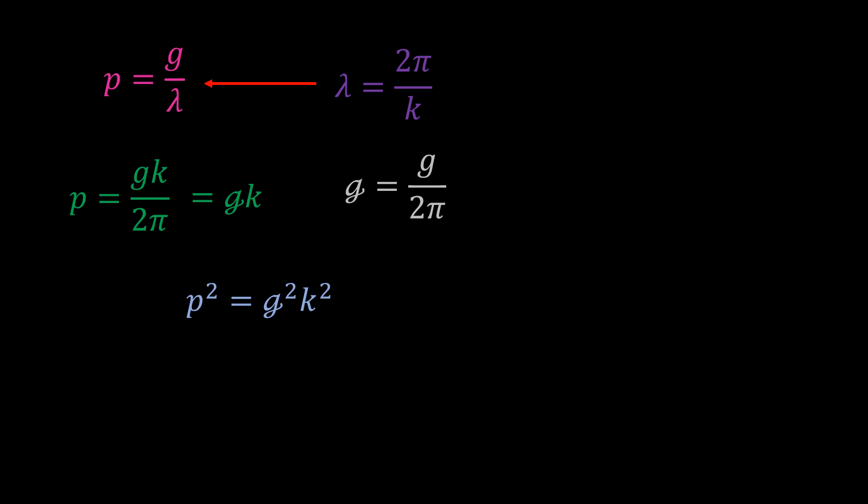Similarly, the energy equation is given as gf. And since f is equal to omega over 2 pi, we have energy equal to g bar omega.